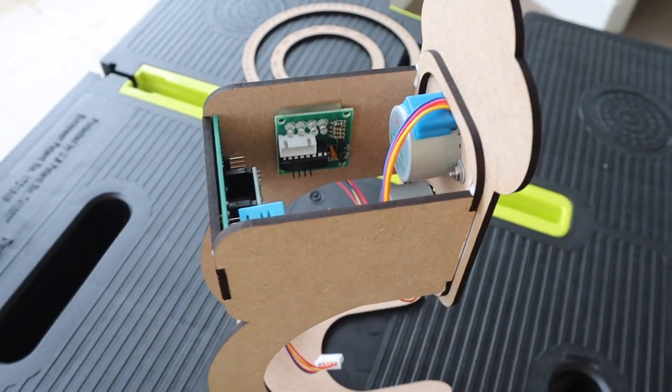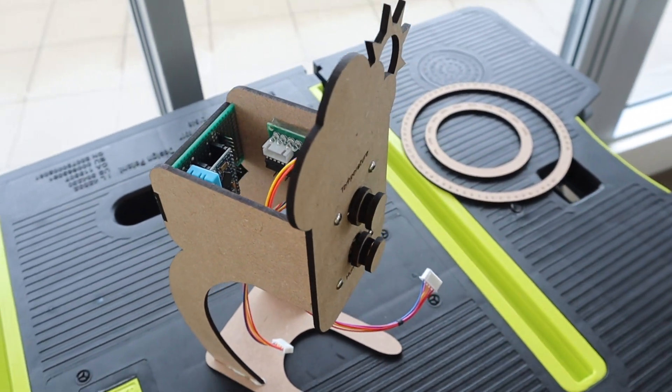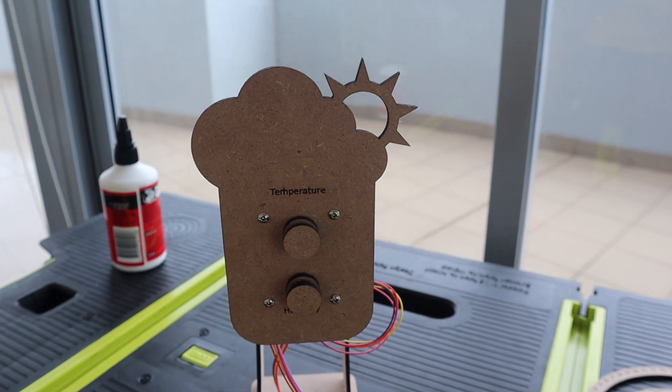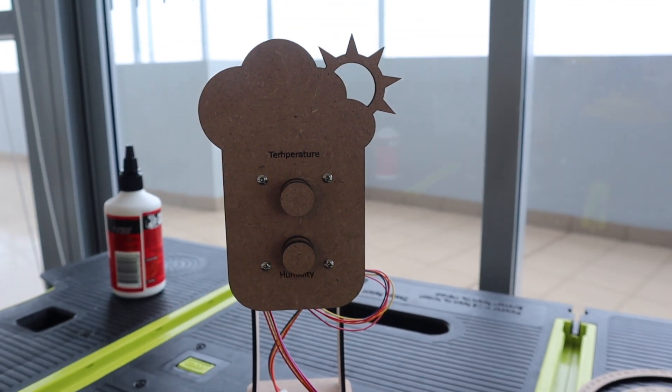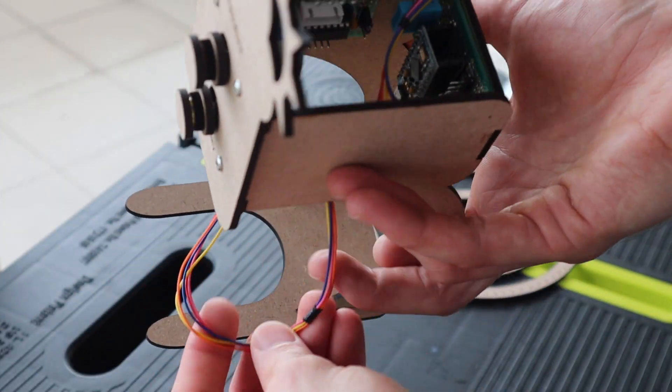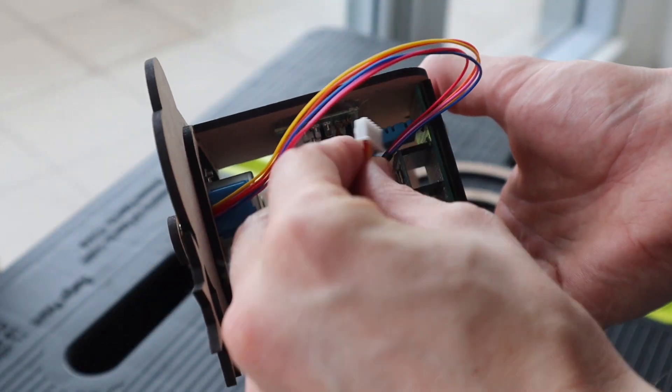Make sure that the Arduino's micro USB port is facing towards the base of the weather station. Once the glue is dry, plug the stepper motors into the drivers and then connect the drivers to Arduino using the cables that you've made up.